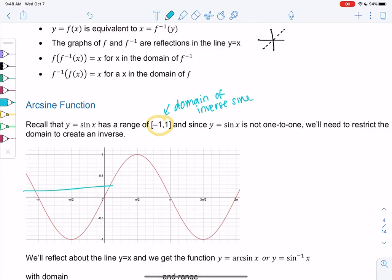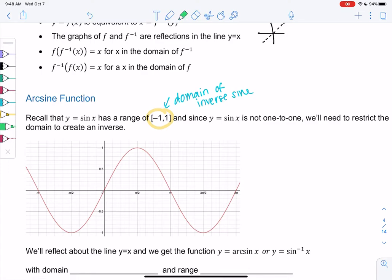But it's not a one-to-one function - the horizontal line test doesn't pass. So we're going to restrict the domain. The easiest way to do this is just to go from negative one to one the first time it happens. We'll start at negative pi over two, go up until we hit one at pi over two.